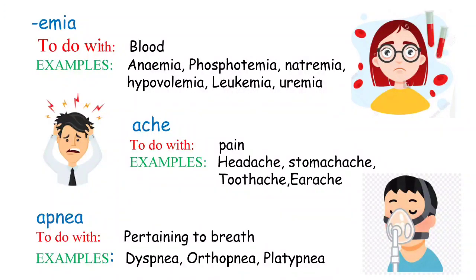The next important term is 'apnea,' related to breathing. When this word is used, picture a boy having difficulty breathing and using a nebulizer. Examples are dyspnea — difficulty in breathing; orthopnea — difficulty in breathing when a person is in a lying (flat) position; and platypnea — shortness of breath when a person is in a standing or sitting position. Remember: ortho means flat position, platy means standing or sitting.